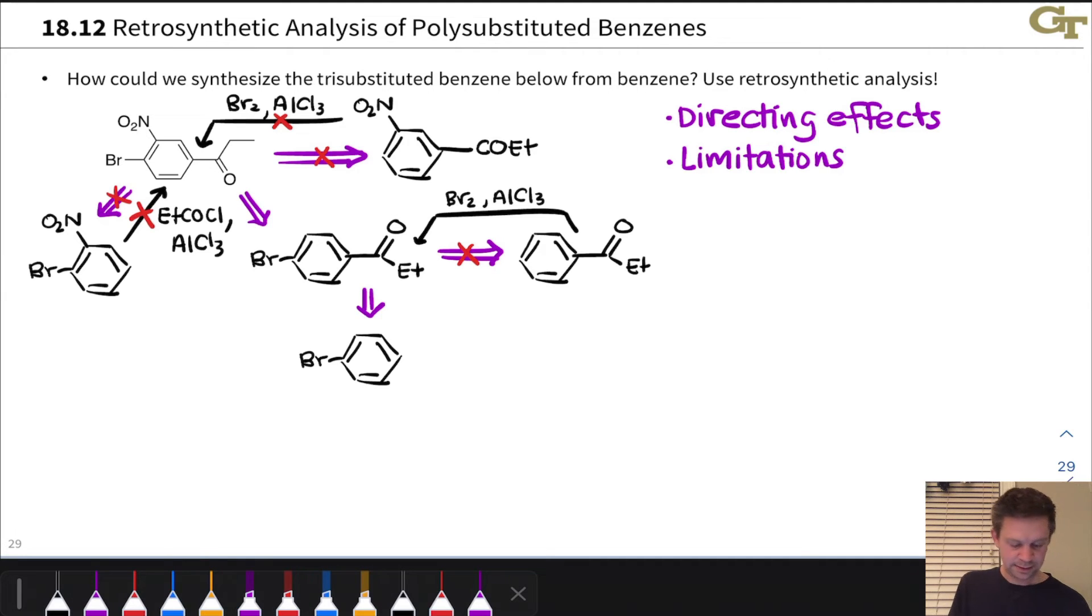The other option is to do Friedel-Crafts acylation of bromobenzene. And this will work as advertised thanks to the bromine being an ortho-para director. So it will direct substitution to the position, para to itself, which is exactly where we want that substituent in the target of this step. So that gets us back to bromobenzene. And now we're one step from benzene. We can brominate benzene. And so we know we can work bromobenzene backwards to benzene.